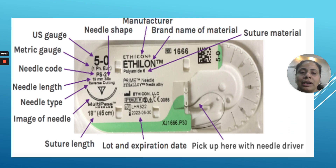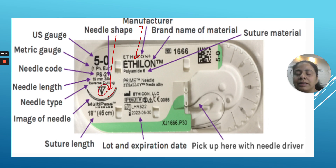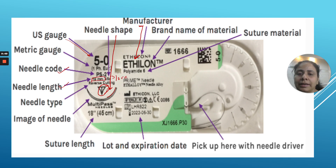Let's look at the different markings on suture packings. Starting from the top: the manufacturer name — in this case Ethylon, though various companies manufacture sutures. Then comes the needle shape — for example, a reverse cutting needle — followed by the suture gauge, the needle coat, and the needle length. This example shows a 19 mm, three-quarter circle, reverse cutting needle.